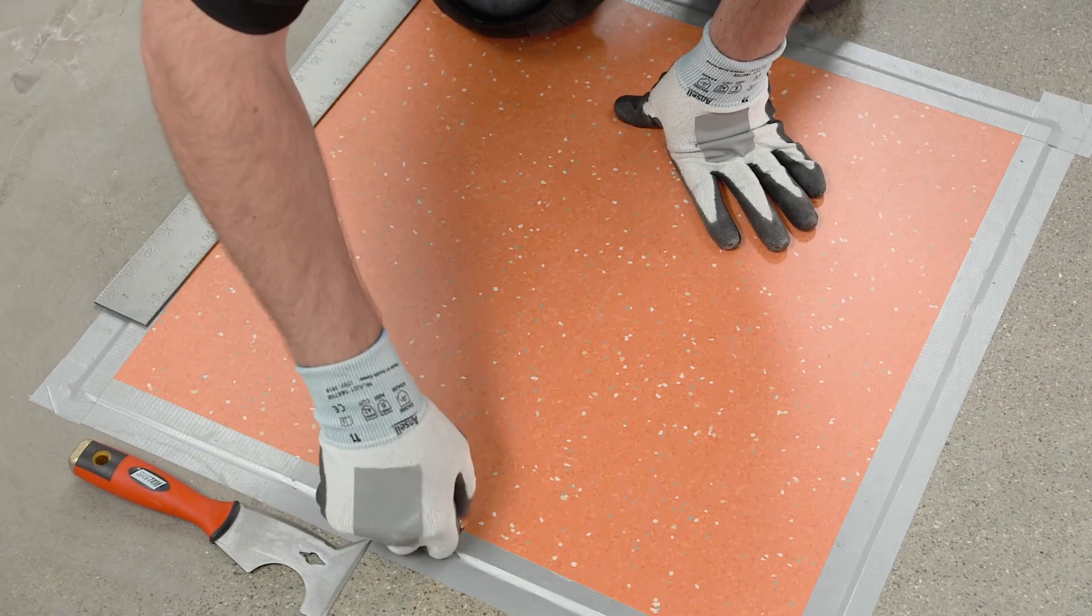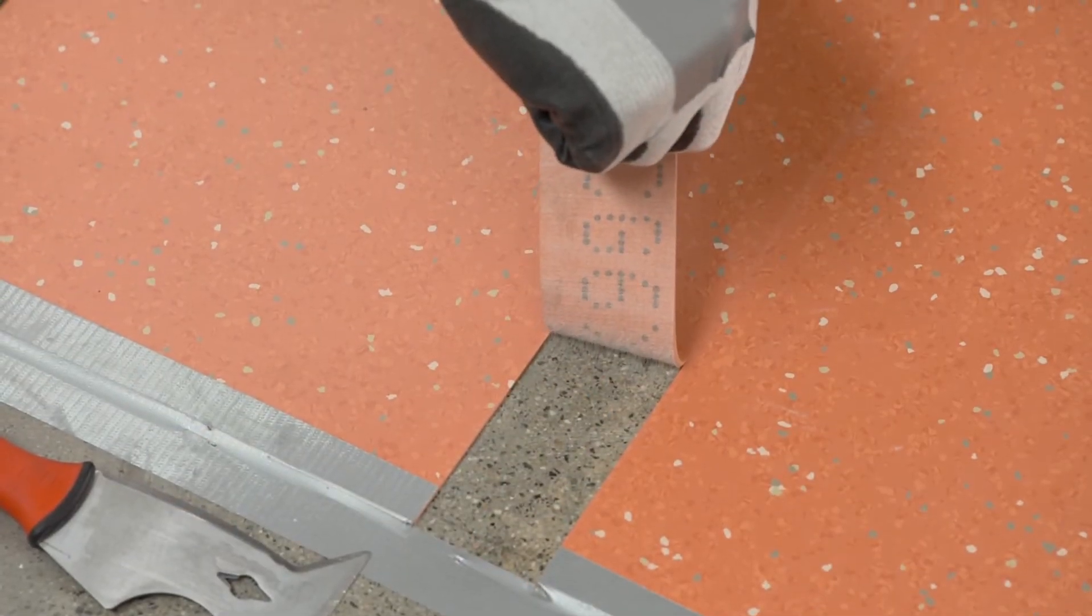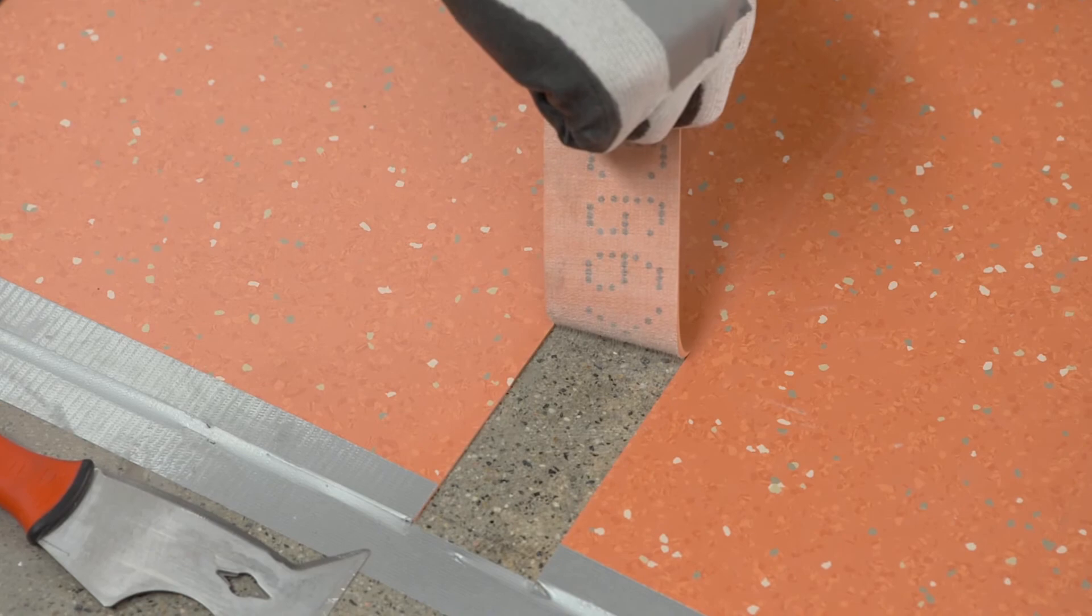The bond test is successful if DryFix 750 is still bonded to the back of the flooring with a small amount of adhesive residue transferred to the substrate.